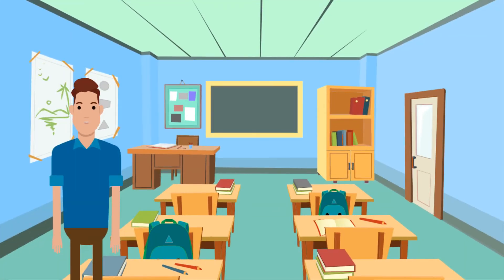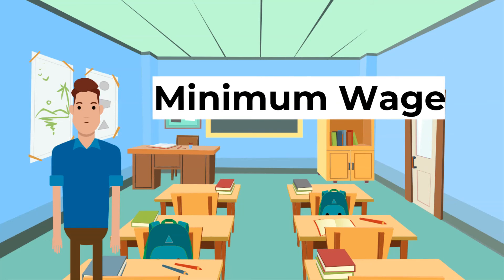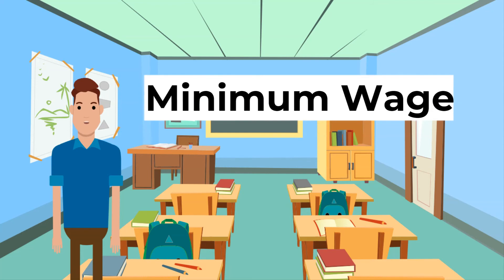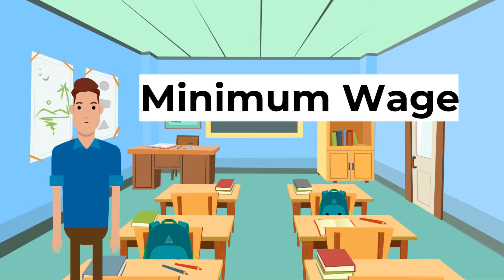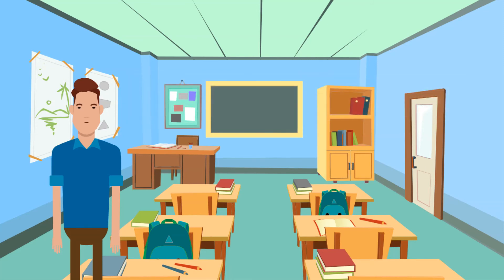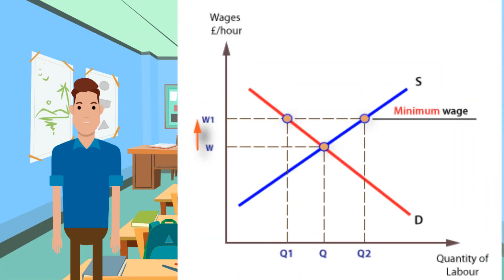What happens when a government interferes in the market with minimum wage legislation? Minimum wage laws exist to raise the wages of the lowest-paid workers, and improved wages may also motivate them to increase their productivity. But some employers argue that minimum wage laws increase costs and reduce the demand for labor. Looking at this graphically: the free market equilibrium wage rate is W. If the minimum wage is set at W1, there will be an excess supply of labor, reducing the quantity of labor demanded to Q1, while Q2 people would want to supply their labor at this rate. If the minimum wage is set below W, it will be below the equilibrium wage rate and have no effect.